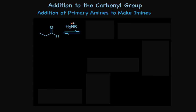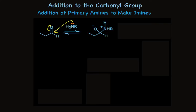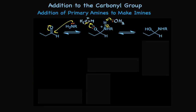Primary amines have a lone pair of electrons on nitrogen. During the initial addition step, this pair of electrons is used to form a bond to carbon, while the pi electrons swing up onto oxygen. The resulting initial product has a positive charge on nitrogen and a negative charge on oxygen. Proton transfer away from nitrogen and proton transfer to oxygen must happen. Because these reactions are typically done in an aqueous medium, H₂O acts as the base to abstract the proton, and protonated H₂O acts as the proton donor. This forms the initial addition product.